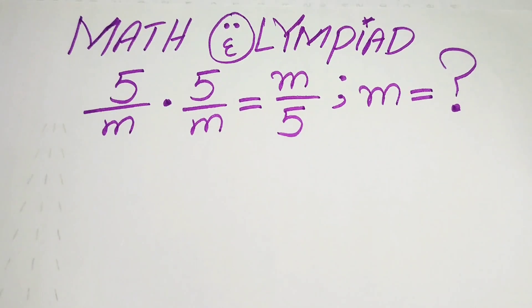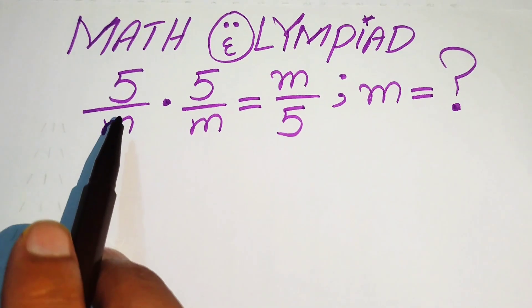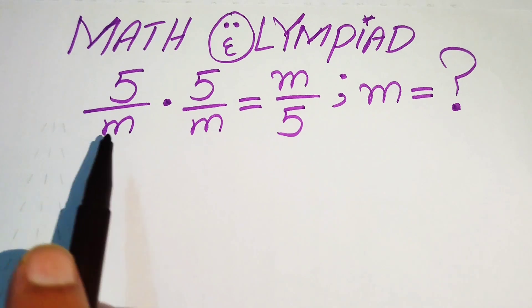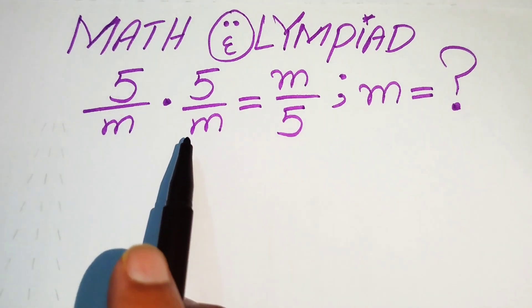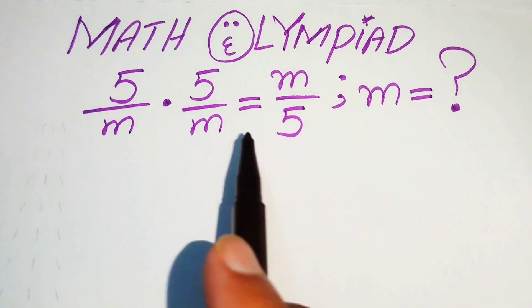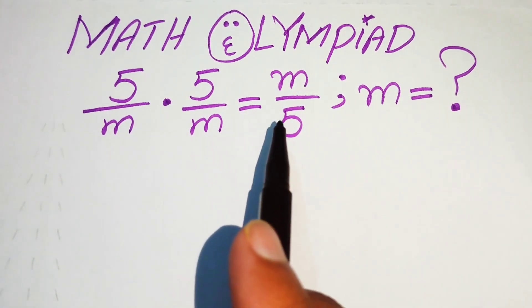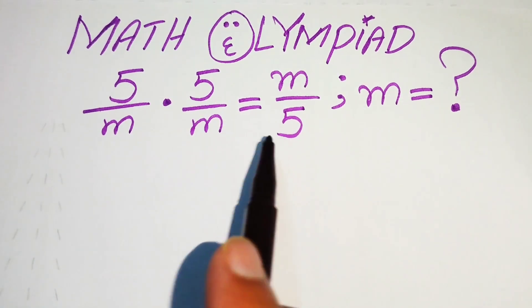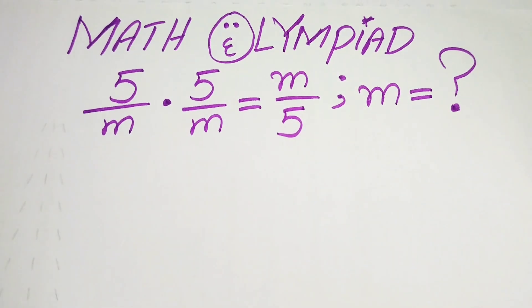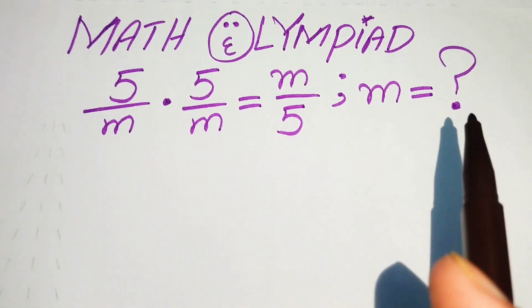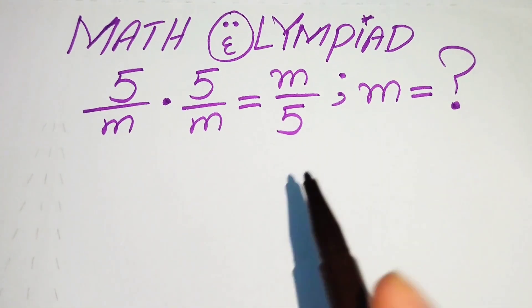Hello everyone, welcome. We solve this Math Olympiad algebra problem. We have (5/m) × (5/m) equals m/5, and we solve this problem for the values of m.